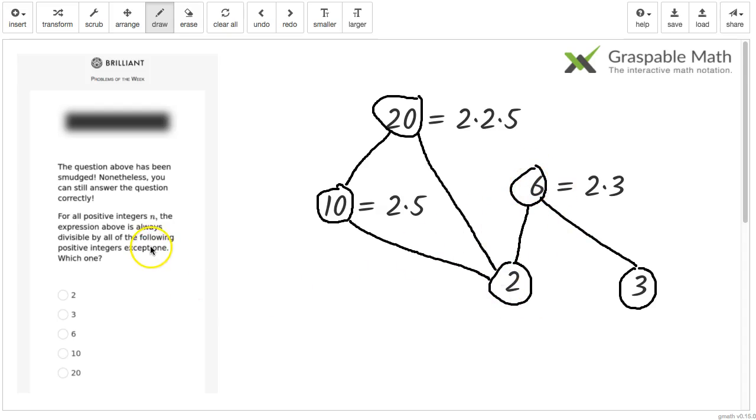But we know that it's divisible by all but one. So it can't be the 2. Okay, get rid of the 2 here.